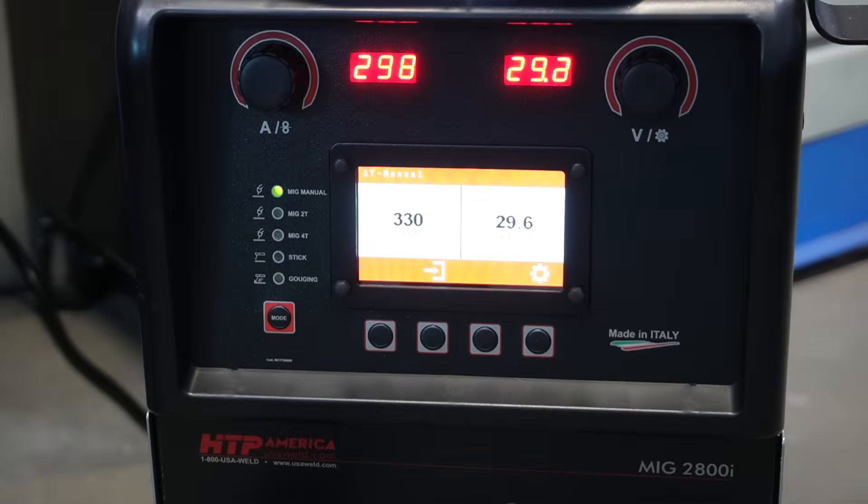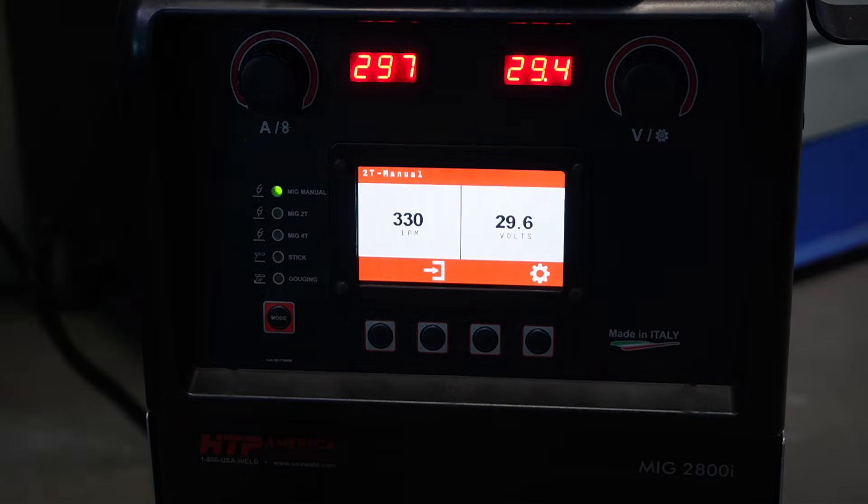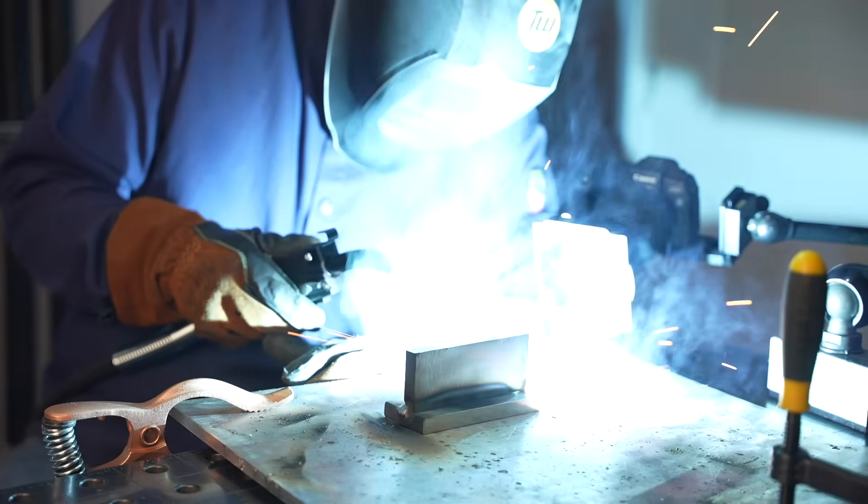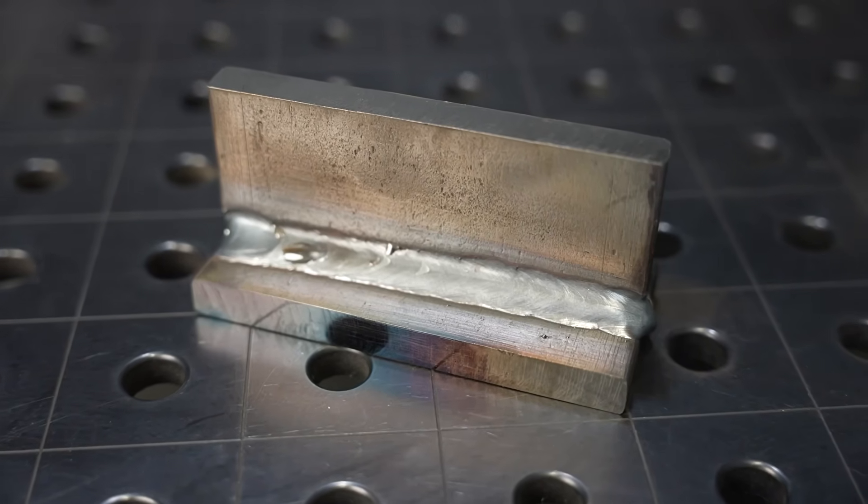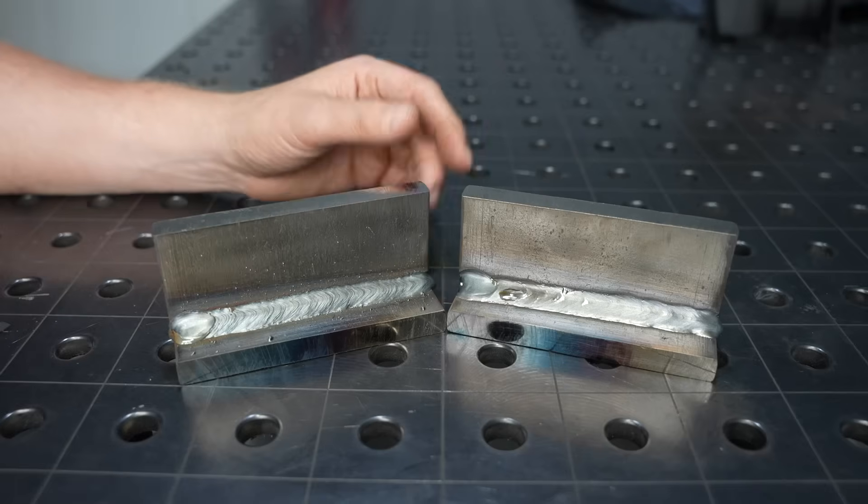Now notice I'm using a push angle here. Once again with spray transfer, you really do need to run a push angle whenever possible. Notice it's just like painting on this weld metal here—there's very little spatter, everything runs really smoothly, but it is a hot and intense process. Got a nice smooth result and I think it'll hold all right.